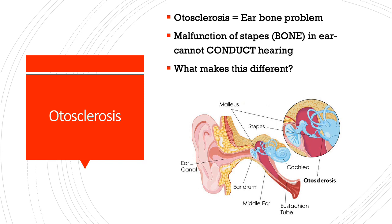With otosclerosis, not all hearing is lost — only air conduction hearing is lost. Because this is a bone problem, treatments focus on the bone: they can replace the stapes with a prosthesis, or alternatively give the patient vitamin D and calcium to help build up the bone. Effectively, otosclerosis is all about the bone.